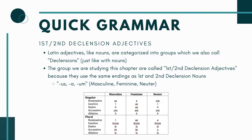Since this is a new chapter, I want to give you a quick grammar overview before we get into the translation. The grammar for chapter 15 is on first and second declension adjectives. We've actually been using adjectives throughout the first 15 chapters, but we're going to bring it together and understand what they are and how to use them. Adjectives describe nouns — that's their basic function. And Latin adjectives, just like nouns, are put into groups called declensions.